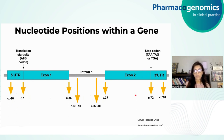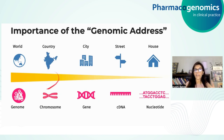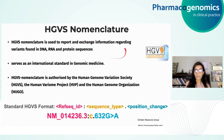Now that we know different ways of representing nucleotide positions, understanding this is important because we cannot just randomly refer to a position — similar to needing to specify country, city, and street to find a location. In the genome, we must specify which chromosome, which gene it belongs to, what the cDNA or coding DNA position is, and what nucleotide has changed to what. There is a standard HGVS nomenclature used to report and exchange information regarding variants found in DNA, RNA, and protein sequences, serving as an international standard in genomic medicine. HGVS nomenclature is authorized by the Human Genome Variation Society (HGVS), Human Variant Project (HVP), and Human Genome Organization (HUGO). The standard HGVS format mentions the RefSeq ID, followed by a colon, then a sequence type, followed by a dot, and then the position change.